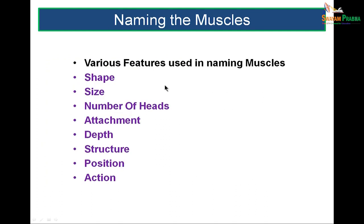A big question: how do we name muscles? Muscles are named based on various features — their shape, size, number of heads, attachment, how deep they lie, their structure, their position, and their action. Any of these features can be used to name a muscle.